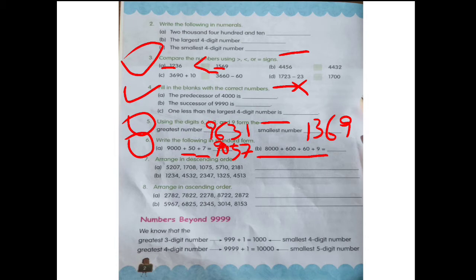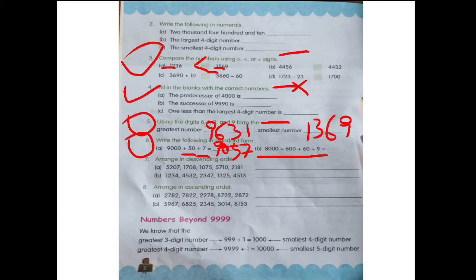They have to write the predecessor of 4,000 — what we covered in the last class. The predecessor is the number that comes just before. When we do counting, it is easy to know — for example, 59, 60, 61: 59 comes before 60. Predecessor means one less. If I have 4, the predecessor of 4 is 3, because 3 is one less than 4. We can find it by doing 4 minus 1.